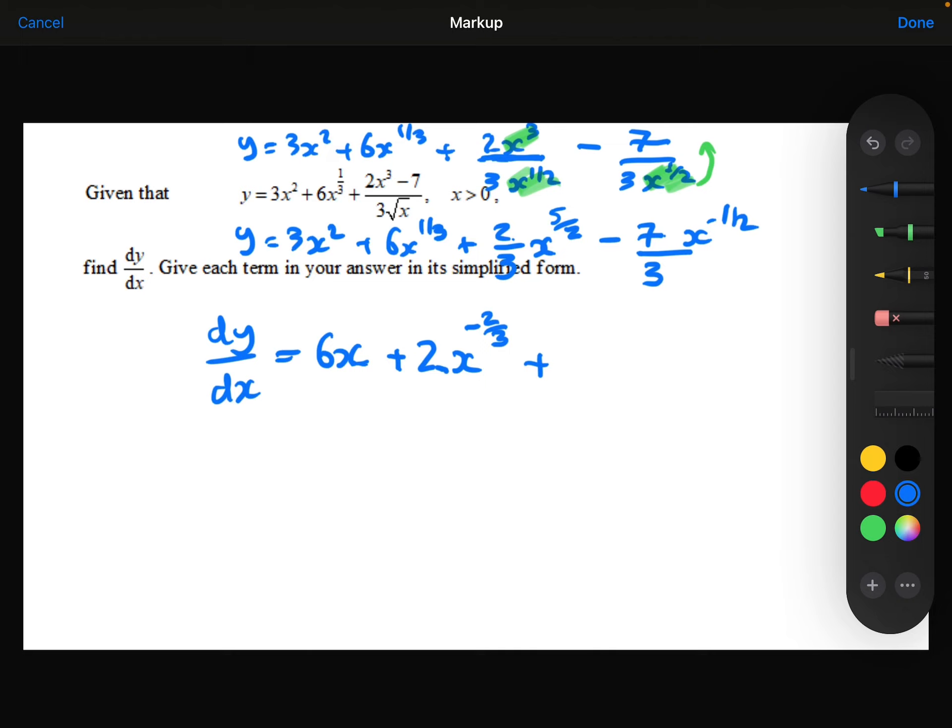Then we've got the 2 thirds multiplied by the 5 over 2, which is going to give 5 over 3. And we'll take 1 away from the power. The 5 over 2 take away 1 is 3 over 2.